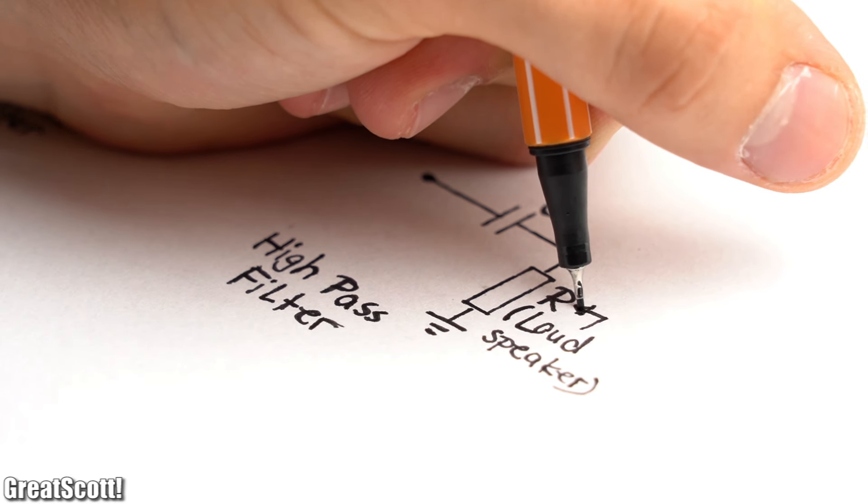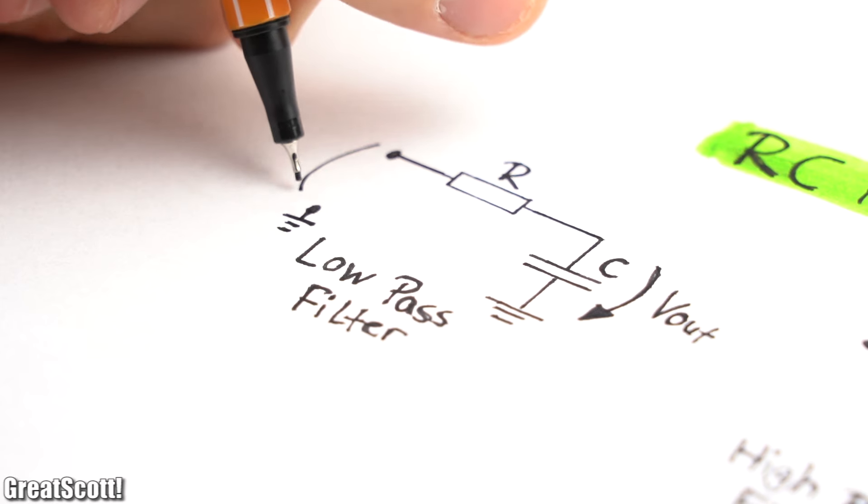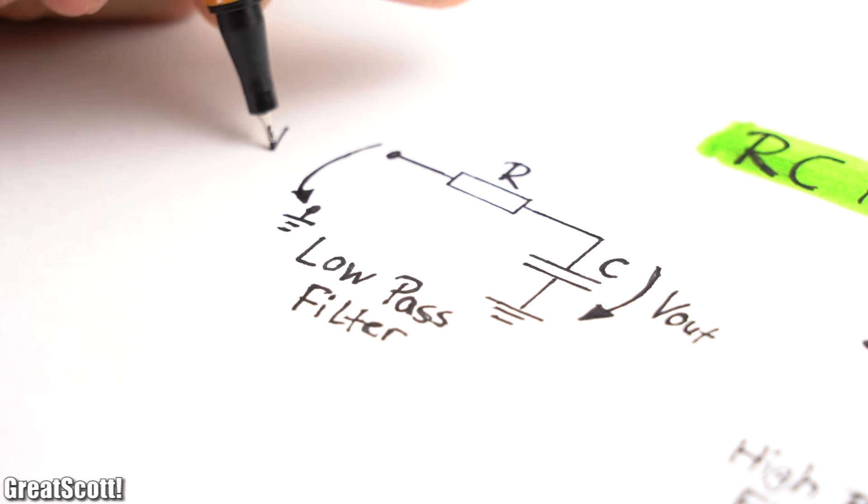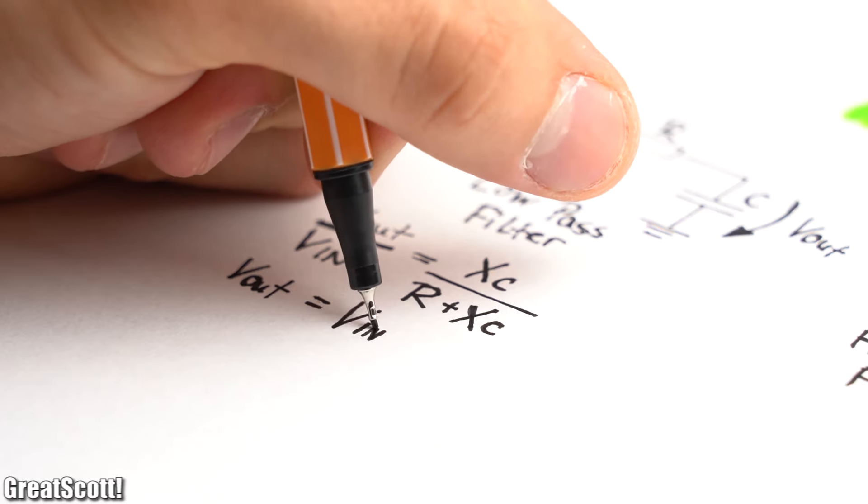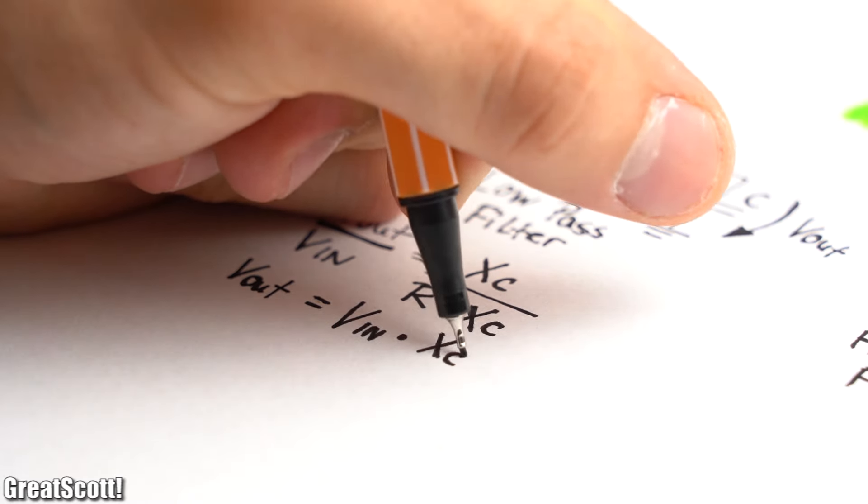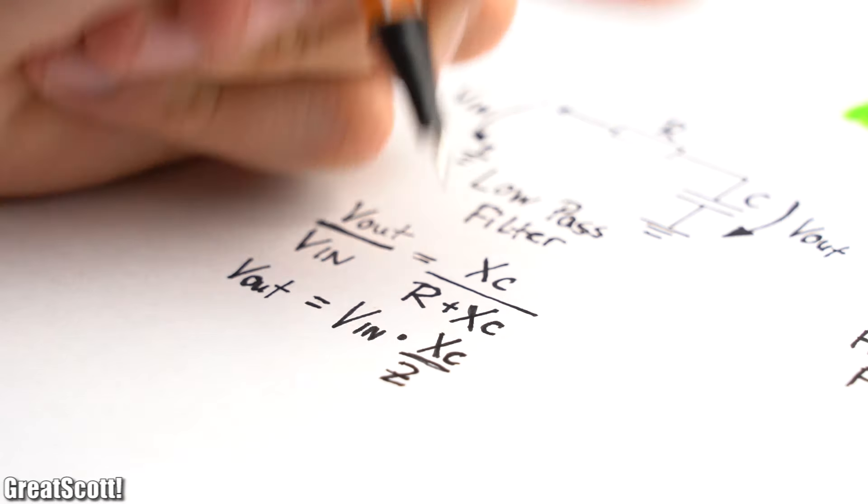Since the high-pass filter is pretty similar to the example we already talked about, let's for now focus on the low-pass filter where the output voltage drops across the capacitor and the input voltage across the resistor and capacitor. That means we build up a voltage divider, and by doing a little mathematical magic, we can find out that the formula for the output voltage looks like this.